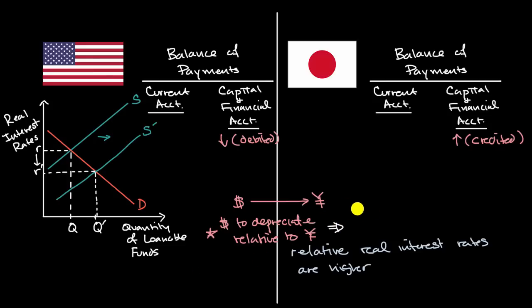Well, now, American goods are relatively cheaper, relatively cheaper, or cheaper than they were before. Cheaper in Japan. And Japanese goods, more expensive, more expensive in the U.S.